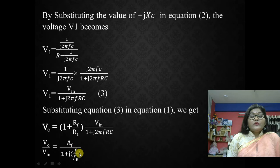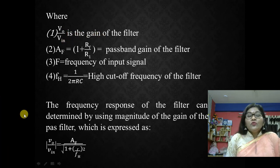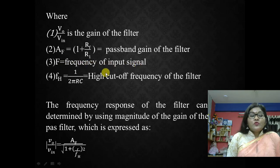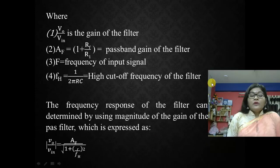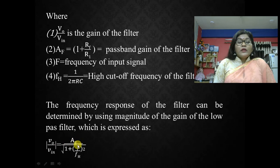Here AF is the passband gain of the filter, F is the input signal frequency, and FH is the high cutoff frequency equal to 1 over (2 pi RC). AF equals (1 plus RF over R1) is the passband gain. The frequency response of the filter is determined using the gain magnitude equation of the low pass filter, expressed as: magnitude of (V0 over Vin) equals AF over the square root of (1 plus (F over FH) squared). This is the gain magnitude equation of the low pass filter.